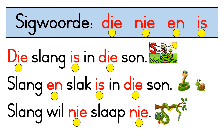Let's look at it from the beginning quickly. The first one says: the snake is in the sun — Die slang is in die so'n. The second one says: the snake and the snail is in the sun — Slang en slak is in die so'n. And then the last one says: snake does not want to sleep — Slang wil nie slaap nie.